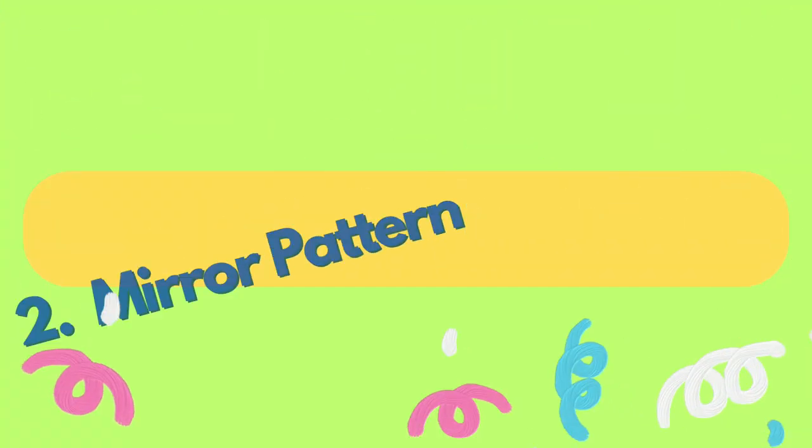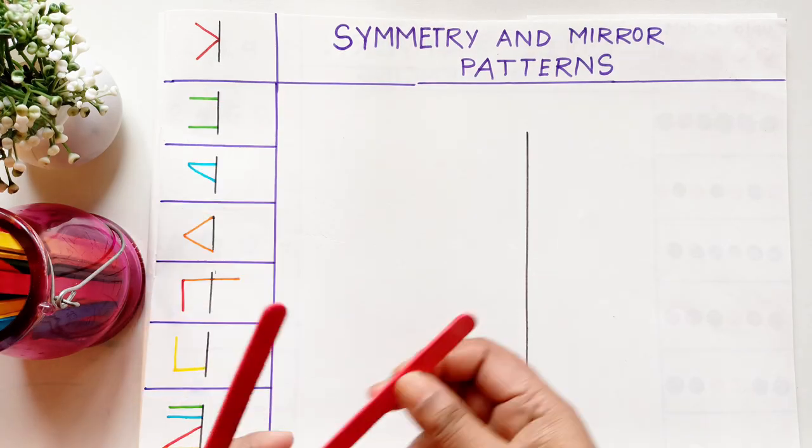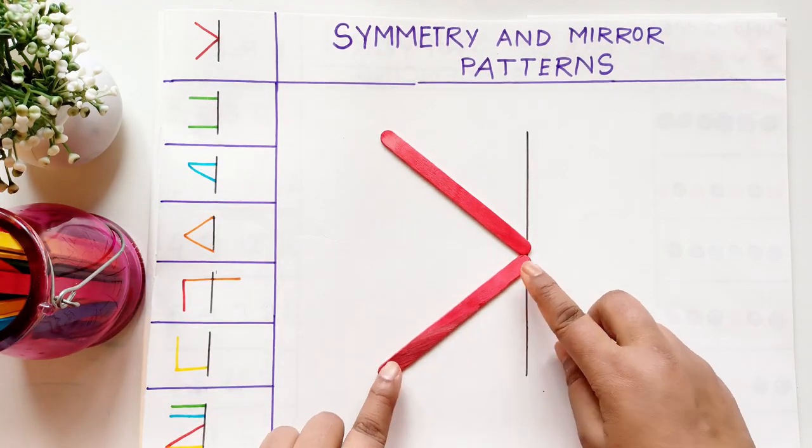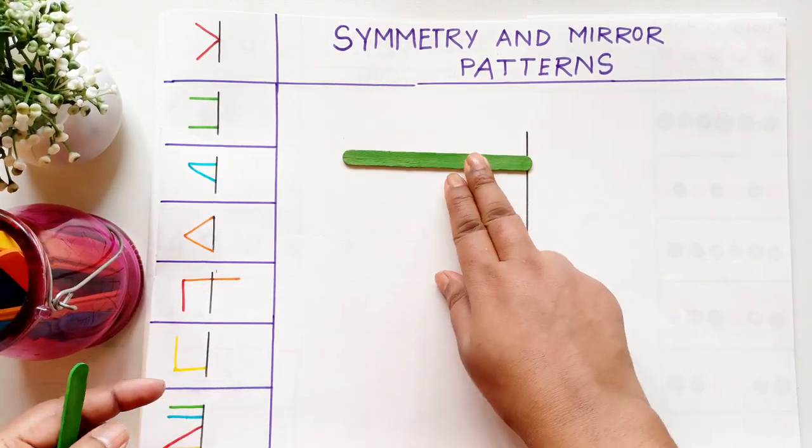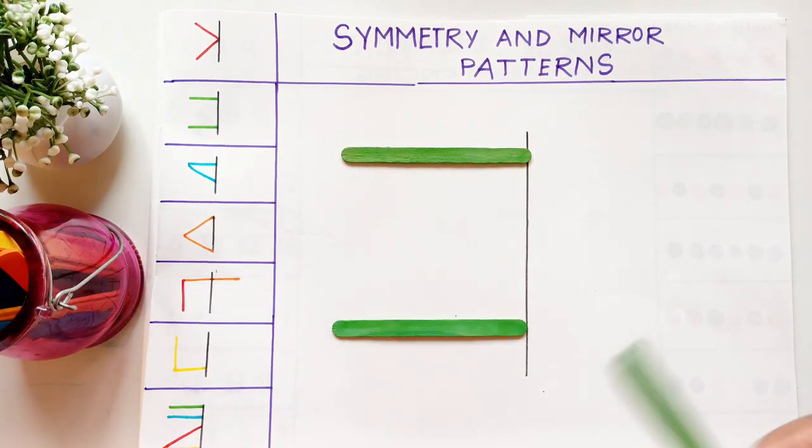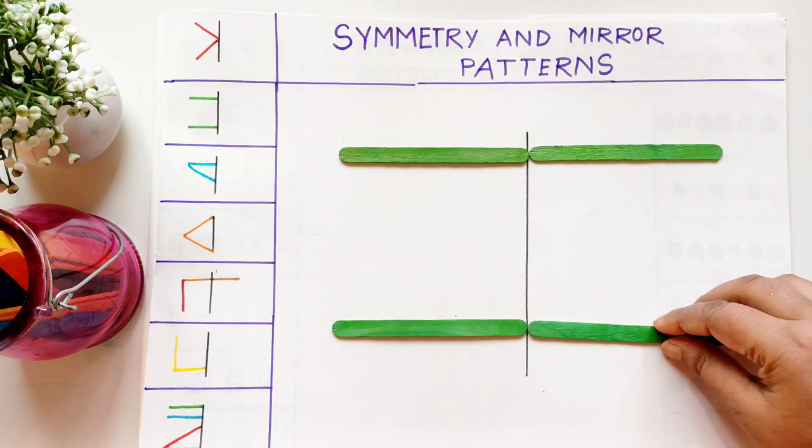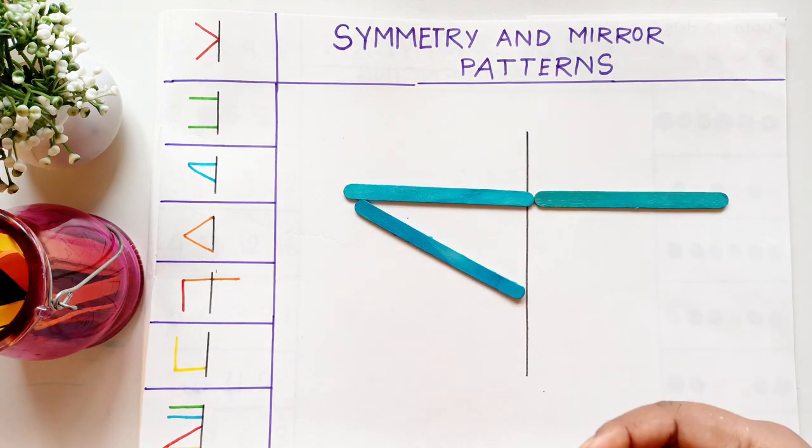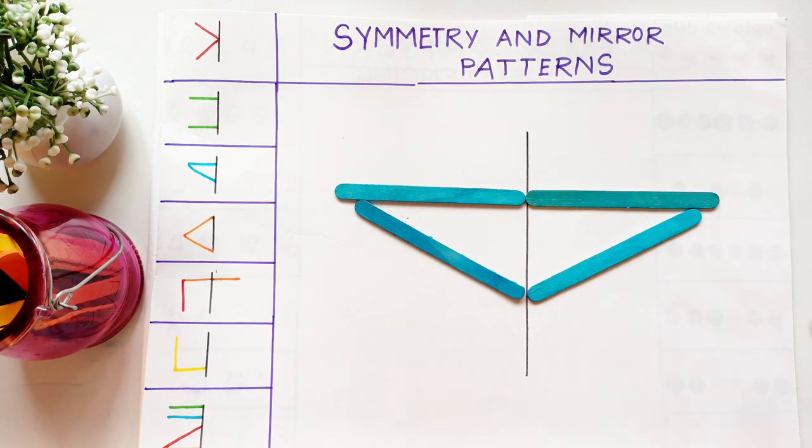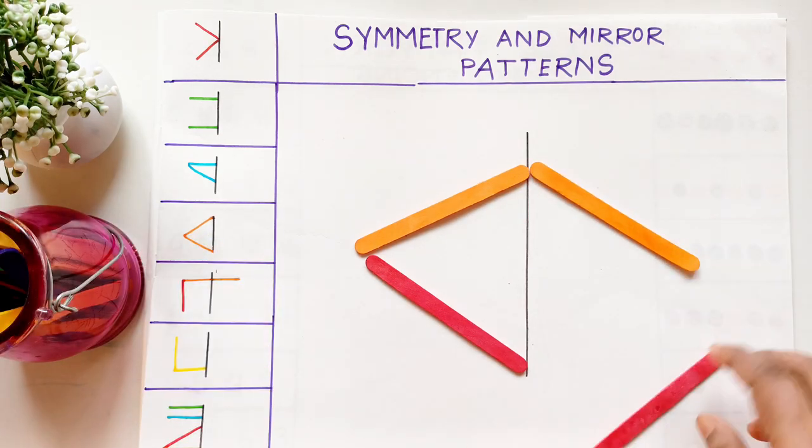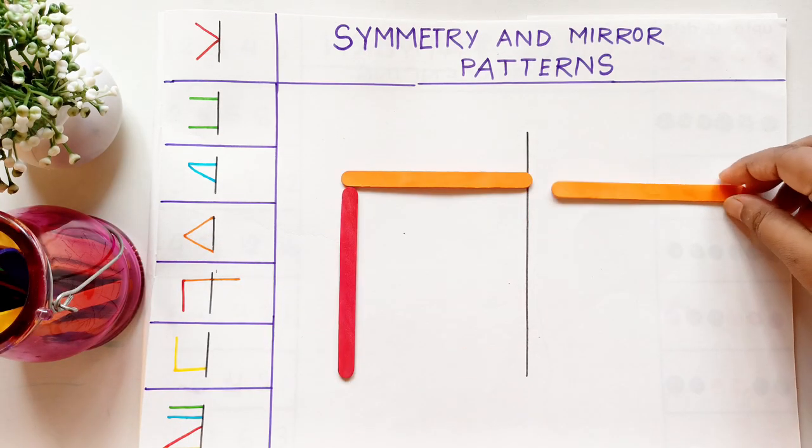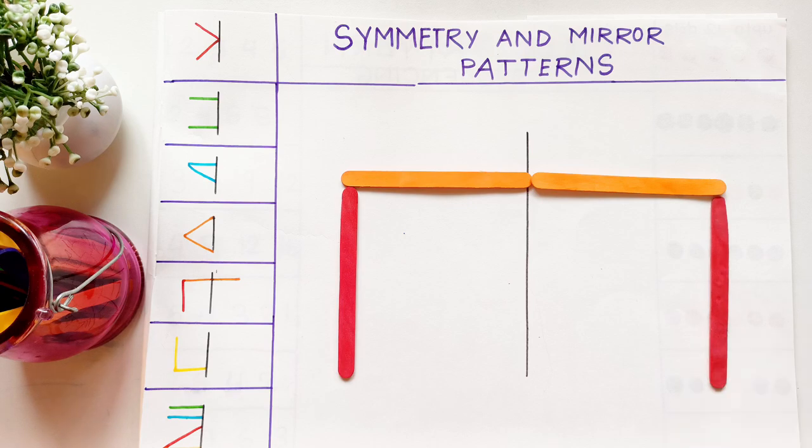Next we have a symmetry and mirror pattern in which we have to draw a line down the center of the paper like this. On one side, create a colorful pattern using the ice cream sticks. This activity helps kids understand symmetry and improve their spatial awareness. It's a simple yet powerful way to enhance both their logical thinking and creativity.